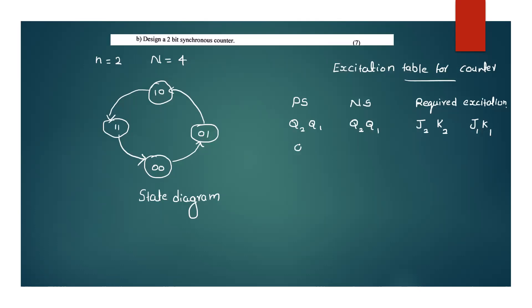The present state is 0,0 and the next state is 0,1. Then the present state 0,1 transitions to next state 1,0. Then present state 1,0 transitions to 1,1. Then present state 1,1 transitions back to 0,0. That completes the state transition table.